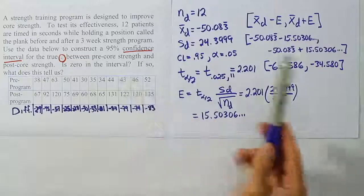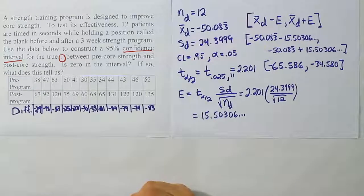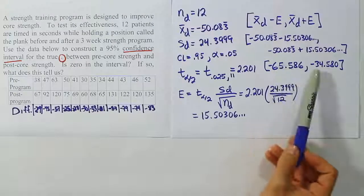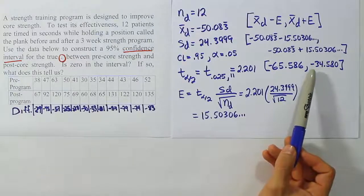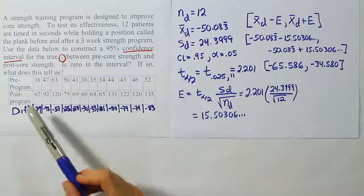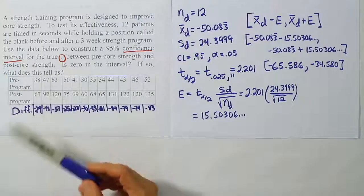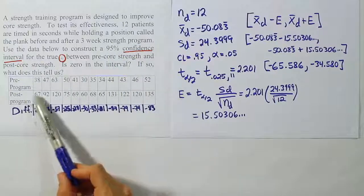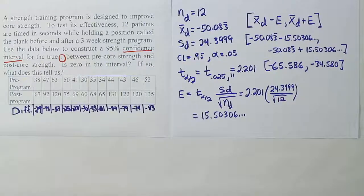And that means that essentially, when the interval is all negative like that, what it's basically saying is that the average difference is negative, which essentially means that we can conclude that there's a statistically significant improvement between the post-program results and the pre-program results. In other words, doing the strength program for three weeks does increase the length of time that you can hold the plank, which is a marker of how strong your core is.